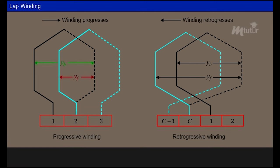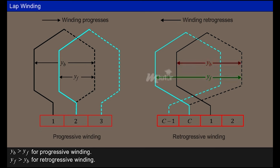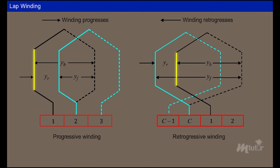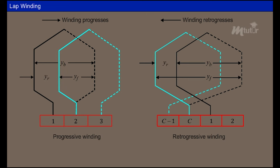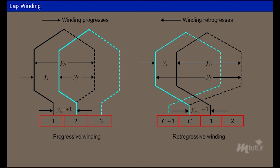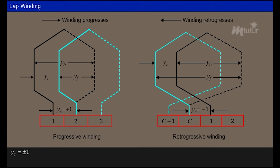For progressive winding, the back pitch is greater than the front pitch, and the front pitch is greater than the back pitch for retrogressive winding. The distance between the beginning of one coil and the beginning of the next coil, measured in terms of armature conductors, is called the resultant pitch Yr. The commutator pitch Yc is the distance between the commutator segments to which the two ends of the same coil are connected. For progressive and retrogressive windings, the two ends of the coil are connected to adjacent commutator segments, so the commutator pitch equals +1 and -1 respectively.